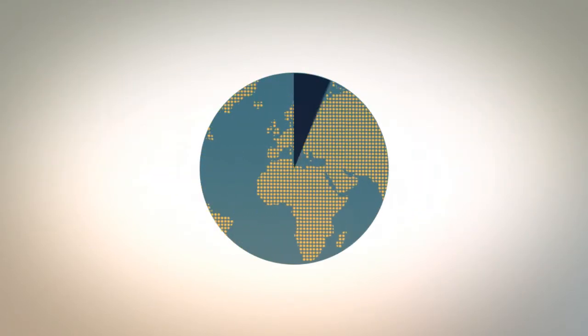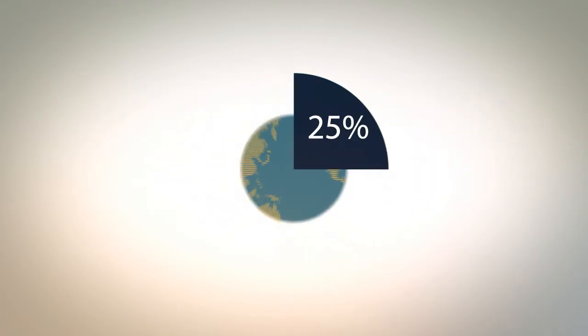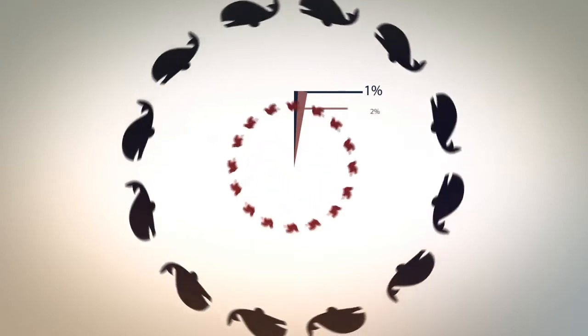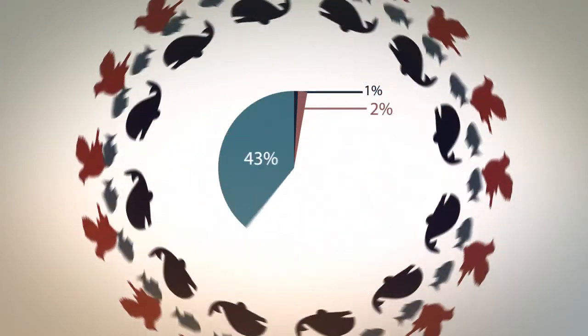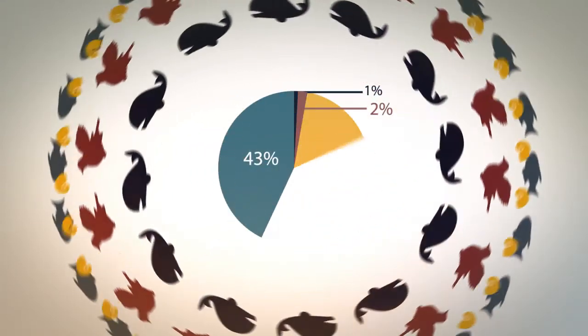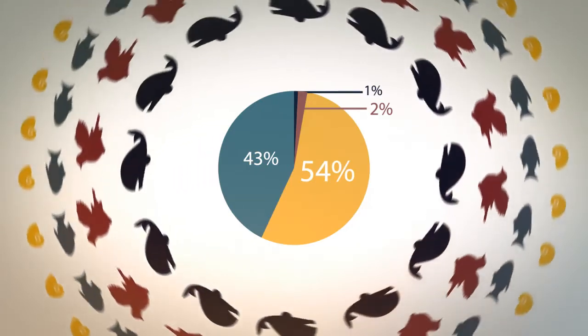Coral reefs contain 25% of all marine life on the planet. Those animals are pretty varied in their species too. Whales make up 1%, birds are 2%, fish are 43%, and mollusks make up 54% of the animals in the reefs.